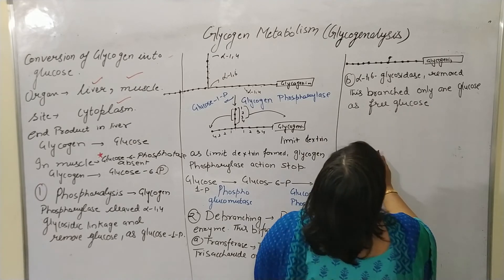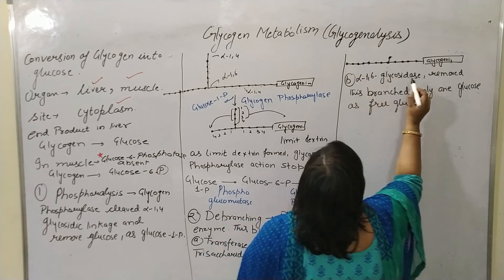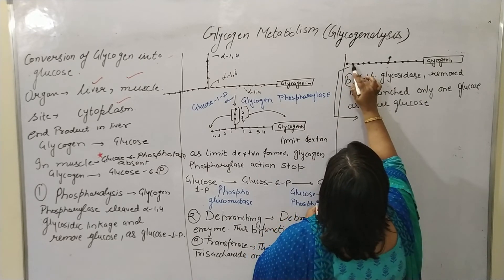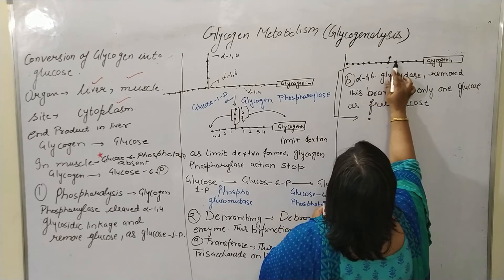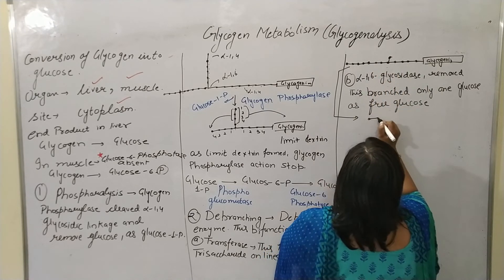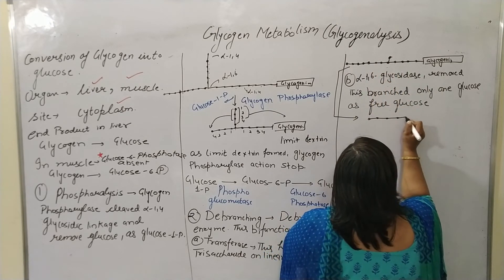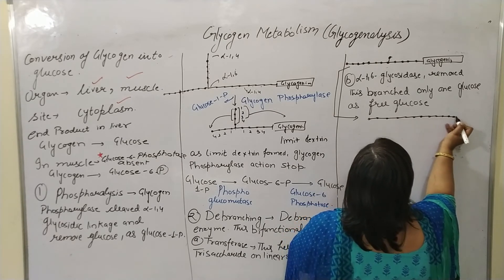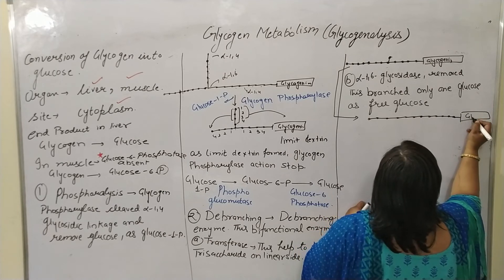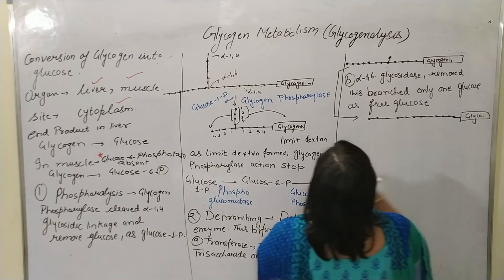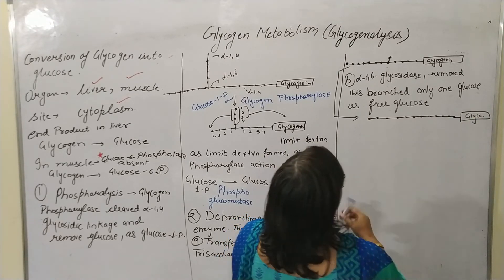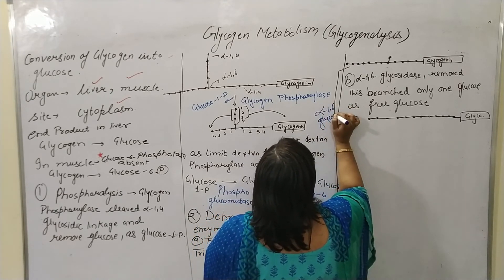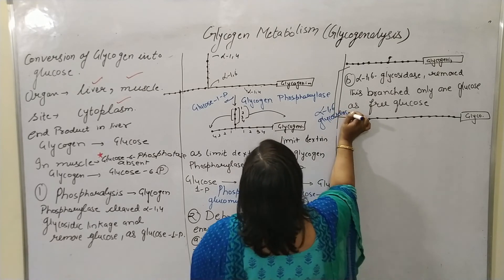The alpha-1,6-glycosidase removes the single remaining glucose at the branch point as a free glucose. This results in a complete linear chain being exposed again.